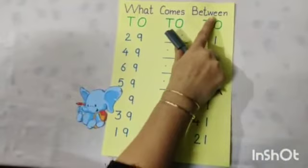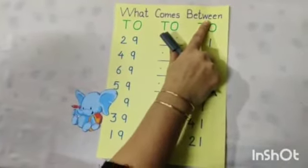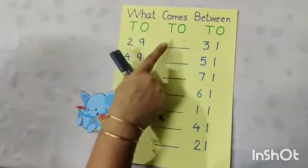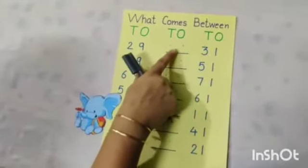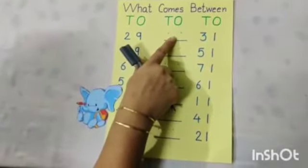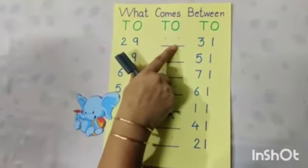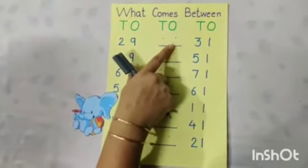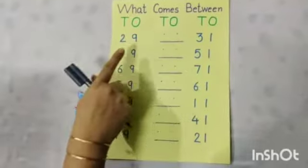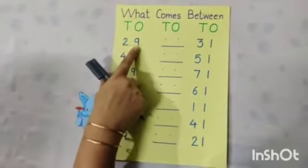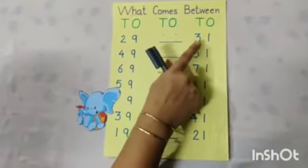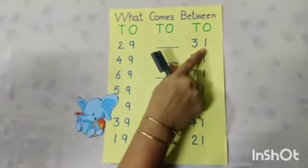Dear kids, between means middle number. Which number? Middle number. After this number and before this number, you have to write the middle number of 29 to 31. Let's start. The number is 29 and 31.